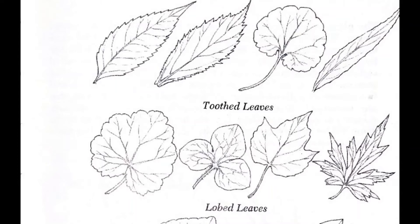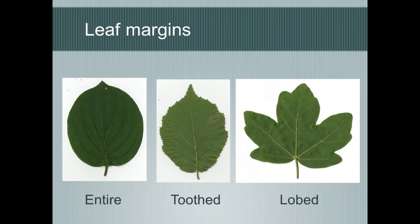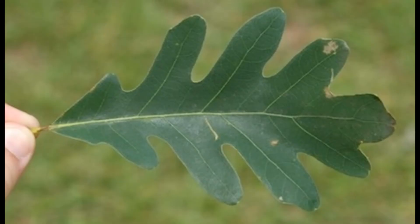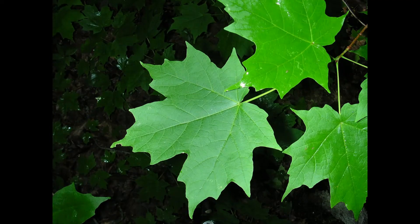The next category is a lobed leaf. A lobed leaf has one or more deep indentations that separates the leaf into several sections, known as lobes. Maple leaves and most oak leaves are good examples of lobed leaves, since their overall shape is one that curves in and then out on itself.